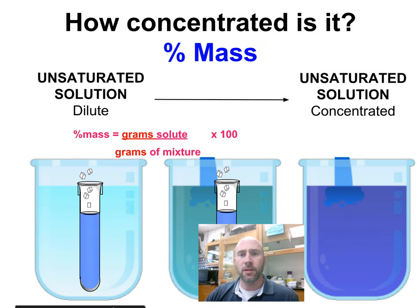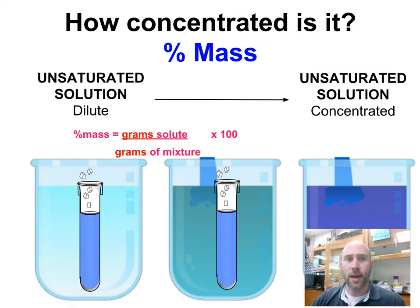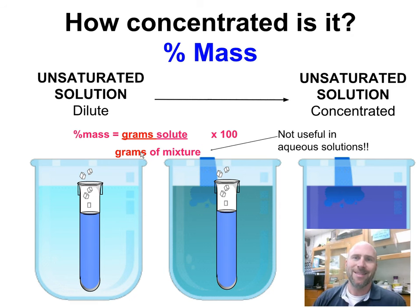Now we want to be able to measure that. There's a few ways you can do that. Percent mass is one of them that we've talked about a little bit in the past. All percent mass is, is the grams of the solute divided by the grams of the whole mixture. It's kind of like any percent, it's the part divided by the whole. The problem with this is it's not terribly useful in aqueous solutions because we're not dealing with grams.